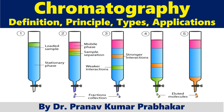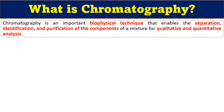Today we will see the basic definition of chromatography, the main principle on which it works, the different types of chromatography, and its basic application in different fields. Chromatography is a separation technique—an analytical, biophysical technique—which helps us in the separation, identification, and purification of compounds from a mixture for their qualitative as well as quantitative analysis. It is commonly used for the separation of a mixture of chemical substances into individual components so that those components can be thoroughly analyzed.